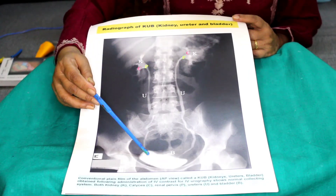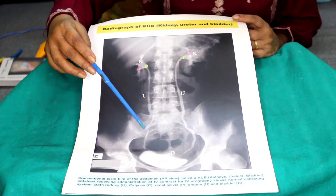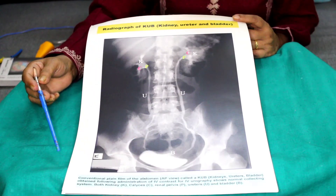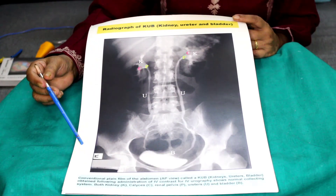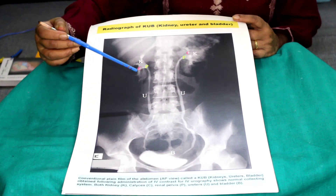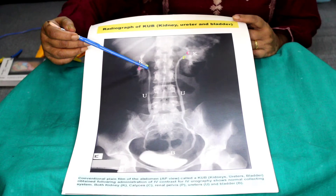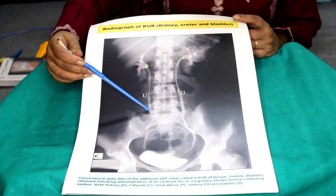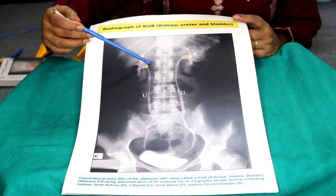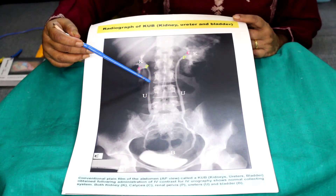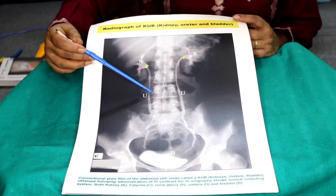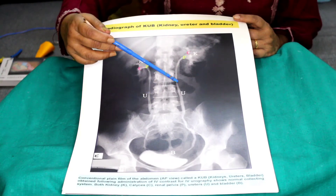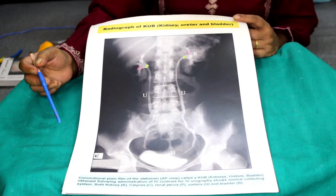Because if there is a stone, there should be a filling defect. So this is how we can study the urinary tract. You will see the ureter when it descends down, it descends near the transverse processes of the lumbar vertebrae.